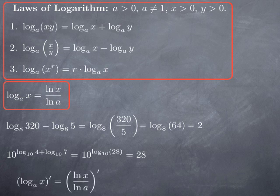Now let's turn to the derivative of the log of base a. The change of base formula immediately gives us the derivative, because it is the derivative of ln(x) / ln(a), and ln(a) in the denominator is just a multiplicative constant. So we pull out 1/ln(a) and multiply by the derivative of ln(x), which is 1/x. We obtain 1 / (ln(a) · x).